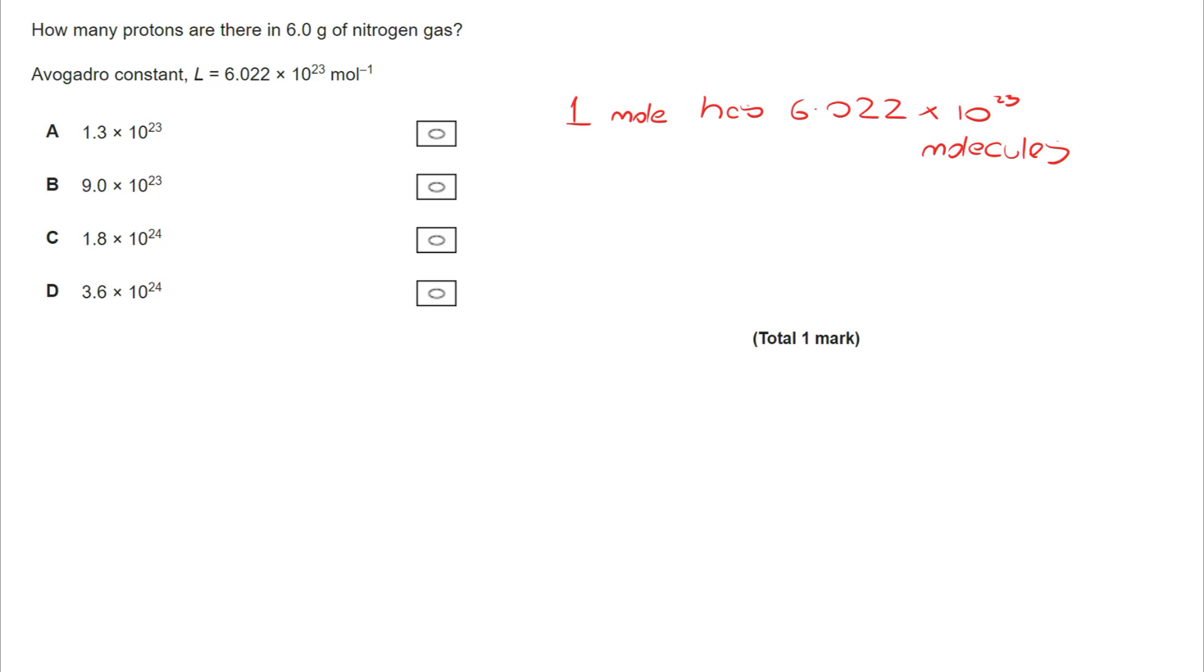So we've got 6.022 by 10 to the power of 23 in one mole. But we've not got one mole of nitrogen gas. We need to work out the number of moles. And we do that by taking the mass, 6 grams, and dividing by the molecular mass. And the molecular mass is 28, because nitrogen exists diatomically. It exists as N2.